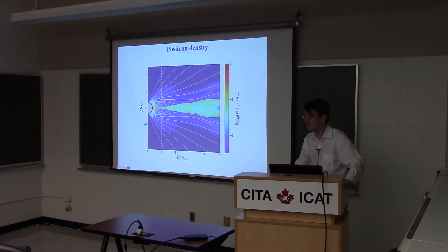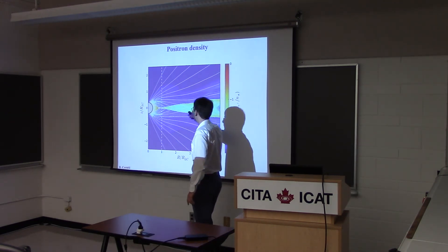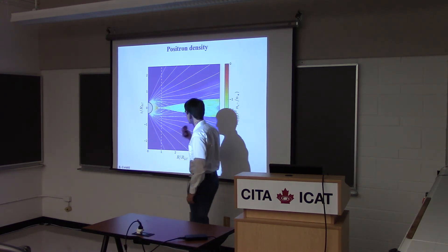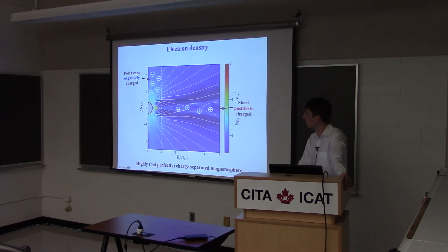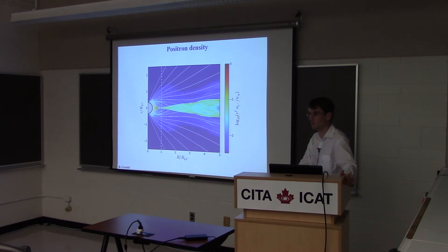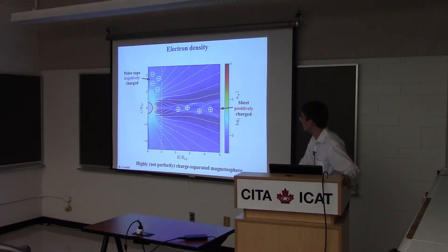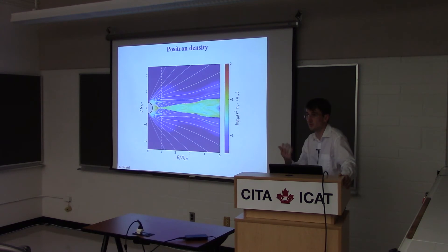Looking at the plasma density — here are positrons — what comes out is mostly from the closed zone and the strong current sheet, but not so much at high latitude. If you compare to the electrons, the structure is fairly charge-separated: the current sheet is mostly positively charged — mostly positrons at the equator and mostly electrons at the poles. You have this very charge-separated structure that you cannot resolve with MHD.